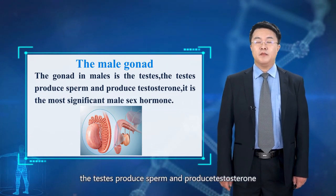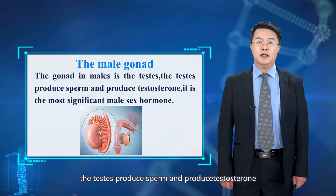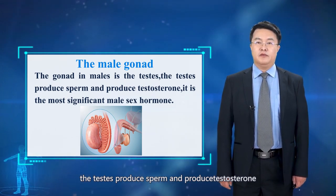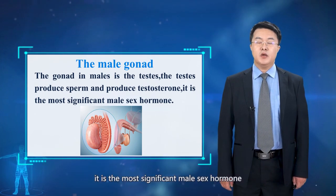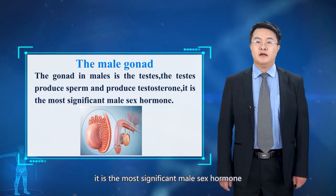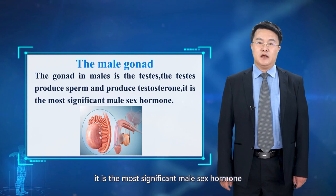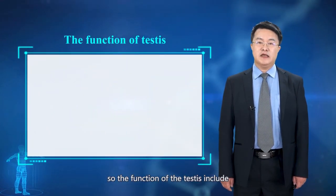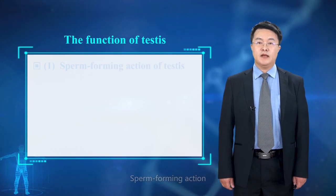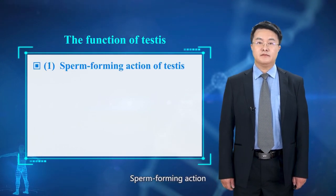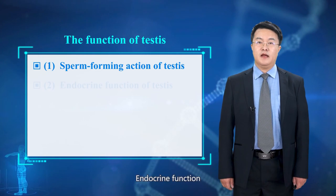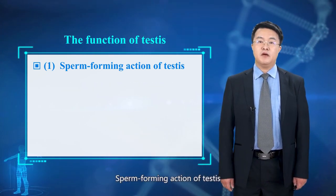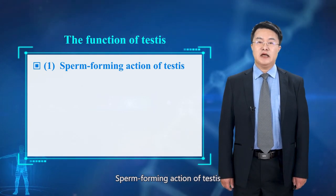The testis produces sperm and produces testosterone as the most important male sex hormone. The functions of the testis include sperm-forming axis and endocrine function.